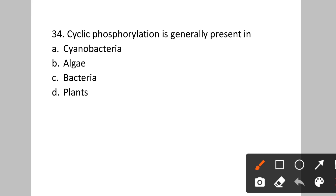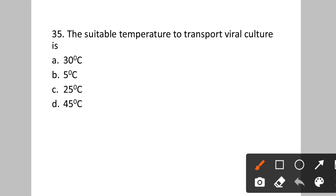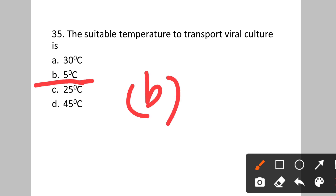Question number thirty-five (last question of Part A): The suitable temperature to transport viral culture is? Option A: 30°C. B: 5°C. C: 25°C. D: 45°C. To transport viral culture, a very low temperature is needed, and that is 5°C. Option B will be the correct answer.